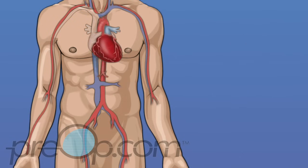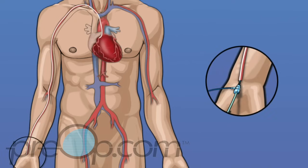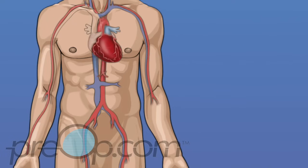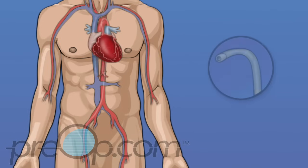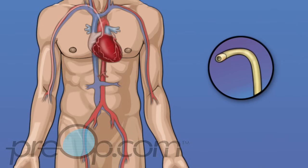The radial artery in the arm is another site where a catheter can be placed. The catheter is inserted at the wrist, then guided to reach the heart. Which artery is selected depends on your personal situation and the experience and training of your cardiologist.